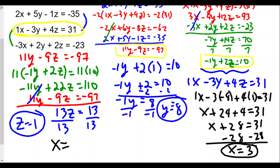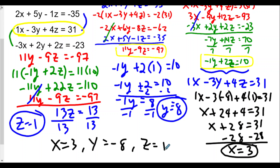So we get x equals 3, y equals negative 8, and z equals 1. If we were to plug these values into all three equations, we should find that the left side equals the right side. Don't forget to do a check just to balance things out.